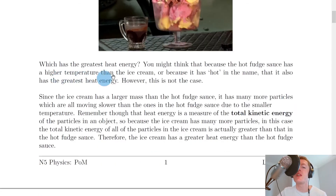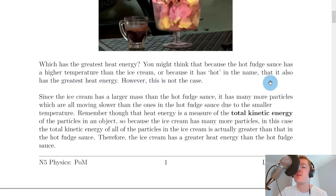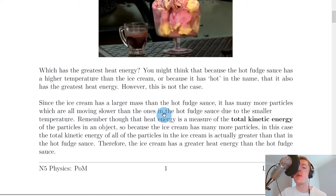But which one has the greatest heat energy? Well, you might think that because the hot fudge sauce has a higher temperature than the ice cream, or because it has the word hot in the name, that it also has the greatest heat energy. However, this is not the case. Since the ice cream has a larger mass than the hot fudge sauce, it has many more particles which are all moving slower than the ones in the hot fudge sauce due to the smaller temperature.